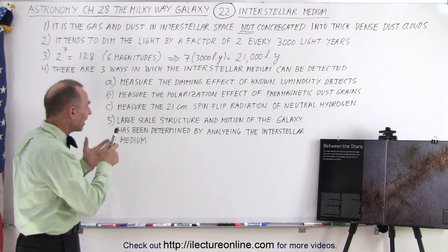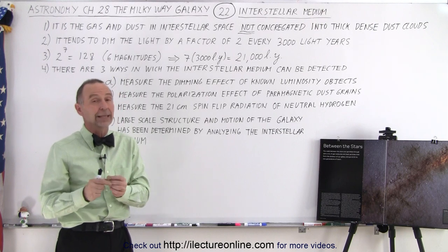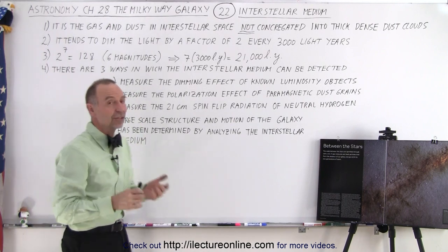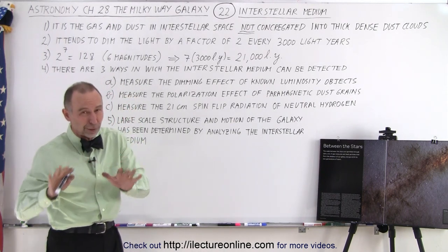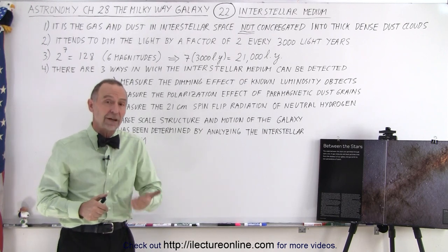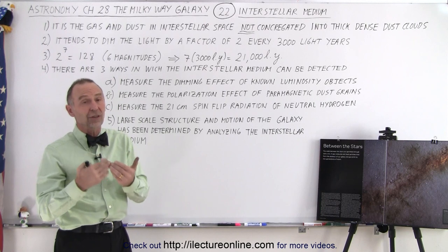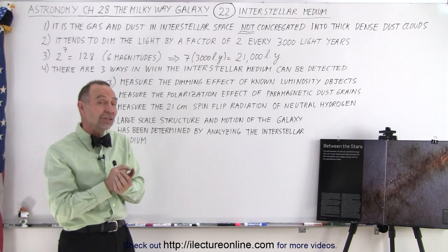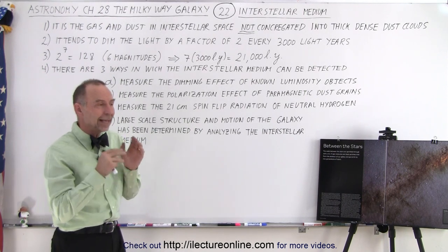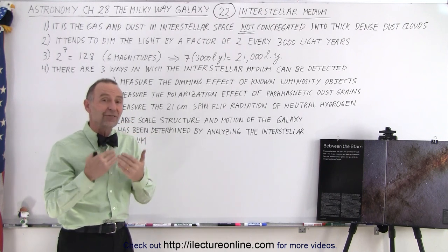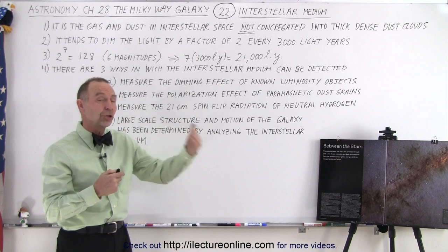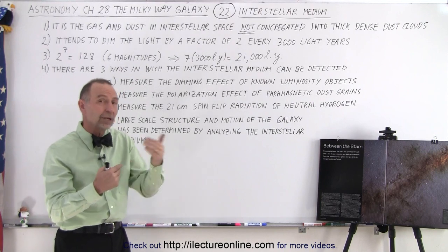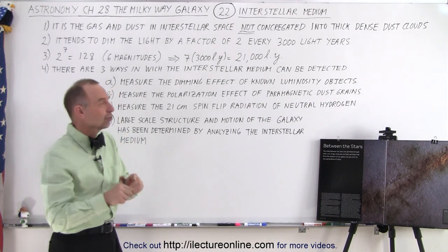How do we measure and detect the interstellar medium? There are three main ways. First, we can measure the dimming effect on standard-luminosity objects. If we observe a Cepheid variable, of which we know the brightness, we measure its brightness, measure the periodicity, calculate the absolute magnitude, and compare that to what we expect. We know the distance, we know how bright it should be, and we measure how bright it appears — the difference tells us about the interstellar medium.